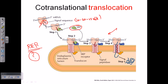Once the SRP binds to the signal peptide, it binds itself to the SRP receptor and brings the ribosome along with mRNA to this location. Through SRP and SRP receptor interaction, the ribosome is positioned close to the translocon. As the ribosome adds more amino acid sequences, the growing polypeptide is inserted inside the ER lumen. After a certain amount of sequence is inserted, the signal peptide is cleaved by a signal peptidase found on the lumen side of the ER membrane.